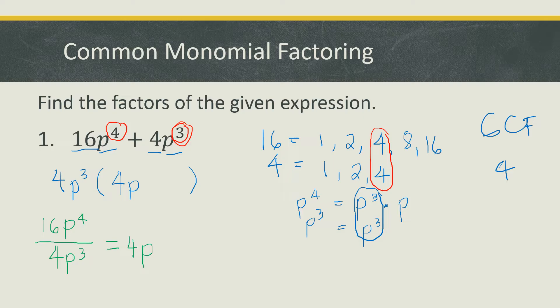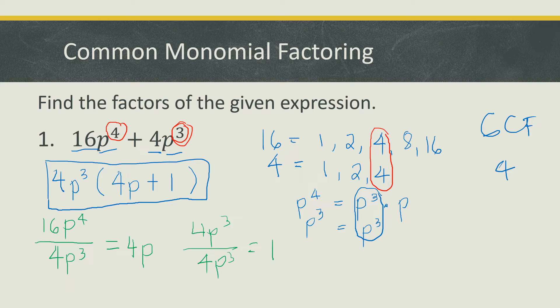Next, divide the second term 4p cubed by the common monomial factor 4p cubed, which gives us 1. Since the sign is positive, we use positive 1. Therefore, the factors of the given expression are 4p cubed multiplied by 4p plus 1.